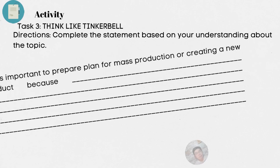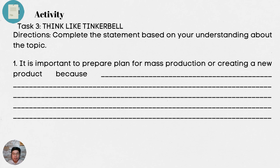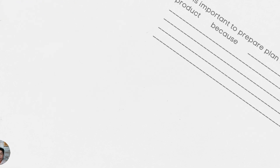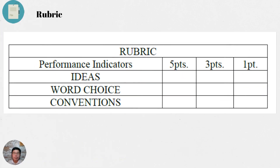Task number three: Think like Tinkerbell. Directions: Complete the statement based on your understanding about the topic — 'It is important to prepare a plan for mass production or creating a new product because...' This will be based on your own opinion, so write your answers in your notebook. Here is the rubric for scoring task number three. Performance indicators: Ideas — 5 points, 3 points, or 1 point. Word choice — 5 points, 3 points, or 1 point. And conventions.